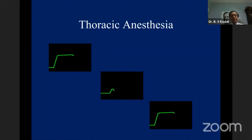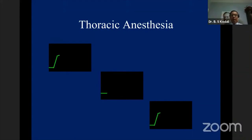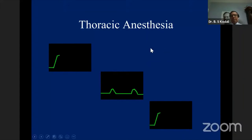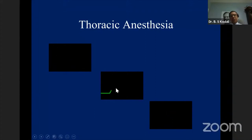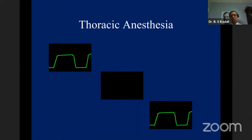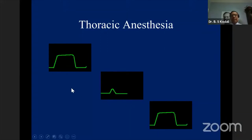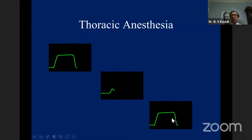In thoracic anesthesia, the best way to confirm double-lumen tube placement is bronchoscopy, but capnography also helps. A normal CO2 waveform that suddenly changes shape tells you that the double-lumen tube could have dislodged or become obstructed, allowing immediate intervention. When you correct the scenario, you get your normal CO2 waveform back.